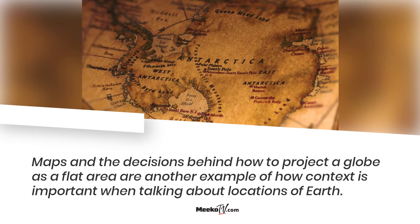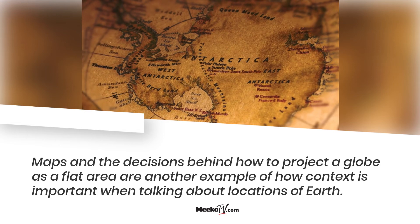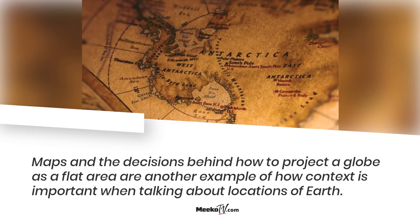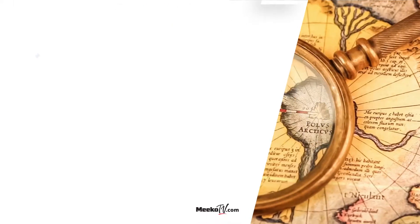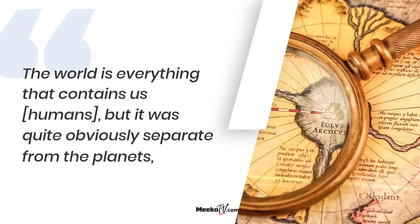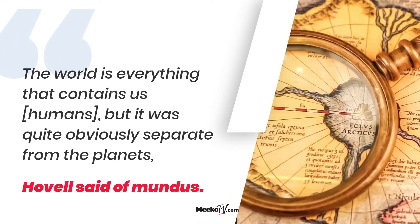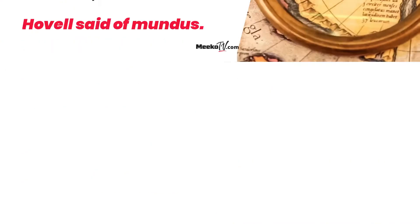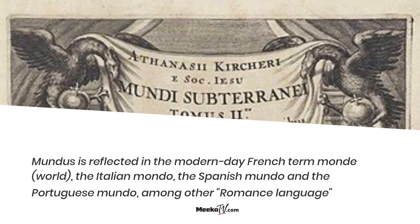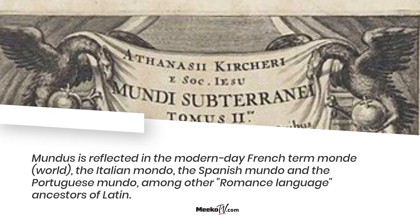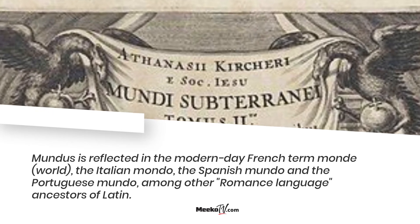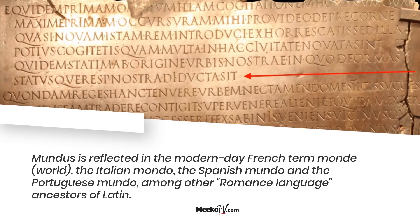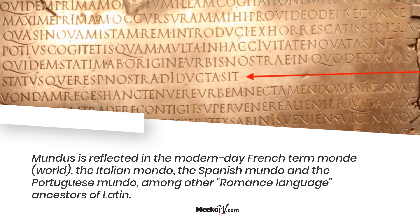Maps and the decisions behind how to project a globe as a flat area are another example of how context is important when talking about locations on Earth. The world is everything that contains us humans, but it was quite obviously separate from the planets, Hovel said of Mundus. Mundus is reflected in the modern-day French term monde, the Italian mondo, the Spanish mundo, and the Portuguese mundo, among other Romance-language descendants of Latin.